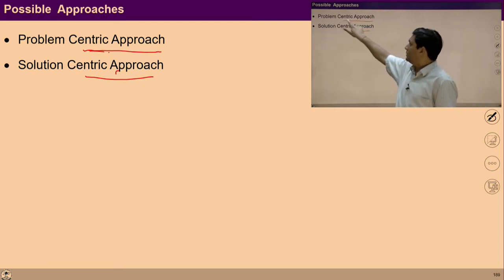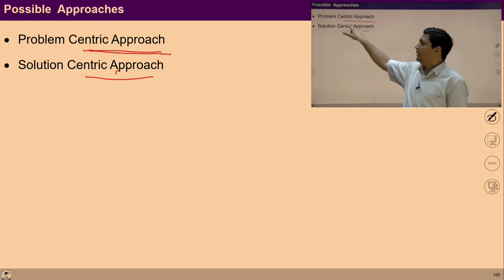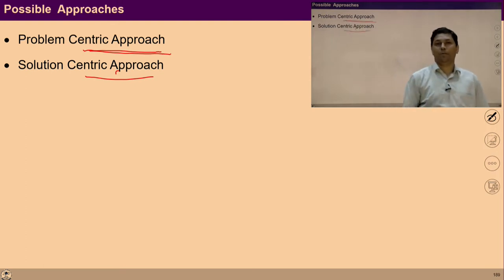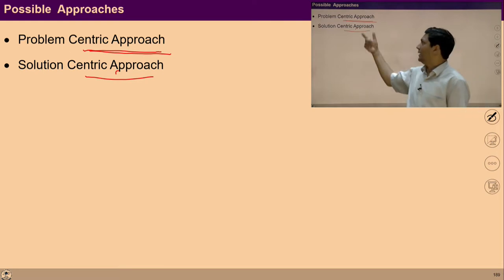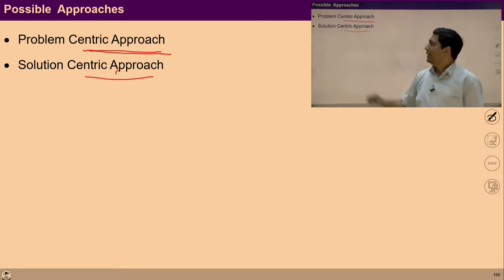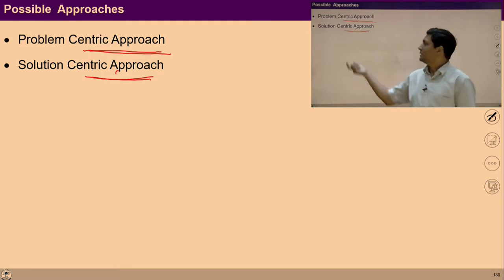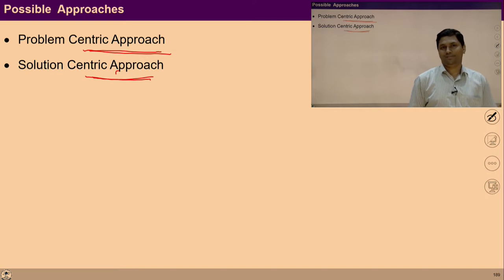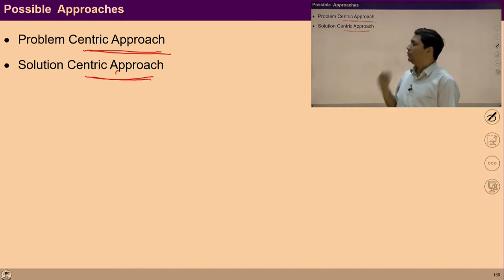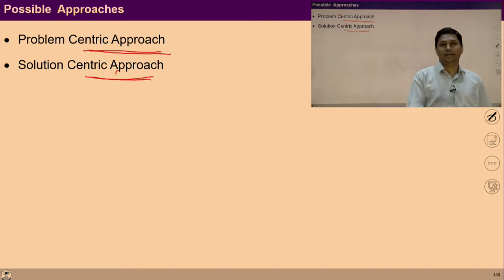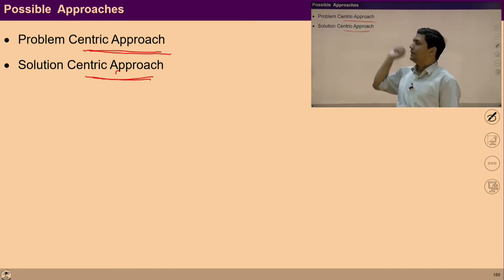In the problem-centric approach, we are primarily focusing only on the problem and we are trying to get rid of it anyhow. But in the second approach, the solution-centric approach, we are contemplating the solution and we are seeing the problem as the absence of the solution. So in solution-centric approach, we have the holistic solution in the center, whereas in problem-centric approach, we are only focusing on the problem.